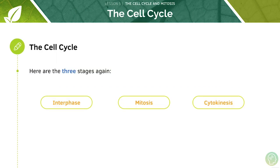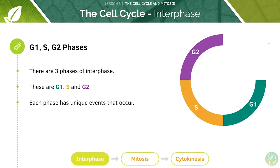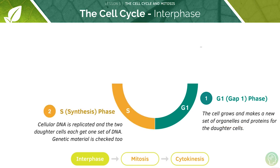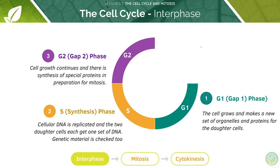The three stages of the cell cycle are interphase, mitosis and cytokinesis. There are three phases of interphase: G1, S and G2, and each phase has unique events. G1 stands for Gap 1 phase — in this phase the cell will grow and make a new set of organelles and proteins for the daughter cells. S stands for synthesis phase — here the cellular DNA is replicated and the two daughter cells each get one set of DNA, and we also get the checking of genetic material. G2 stands for Gap 2 phase — here cell growth continues and there is synthesis of special proteins in preparation for mitosis.